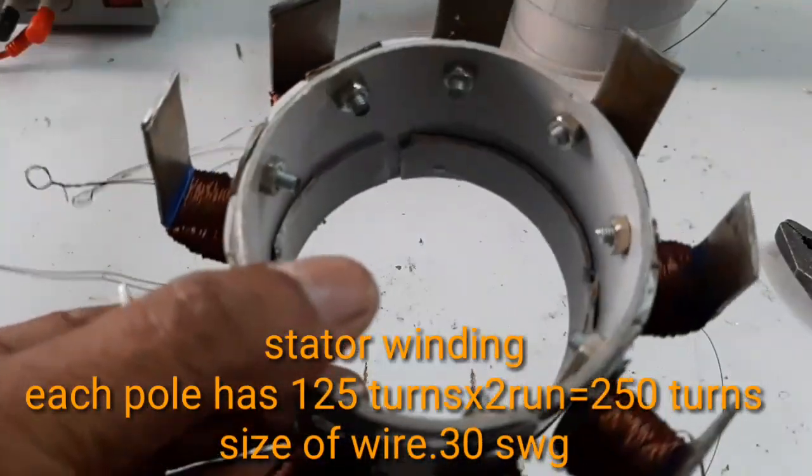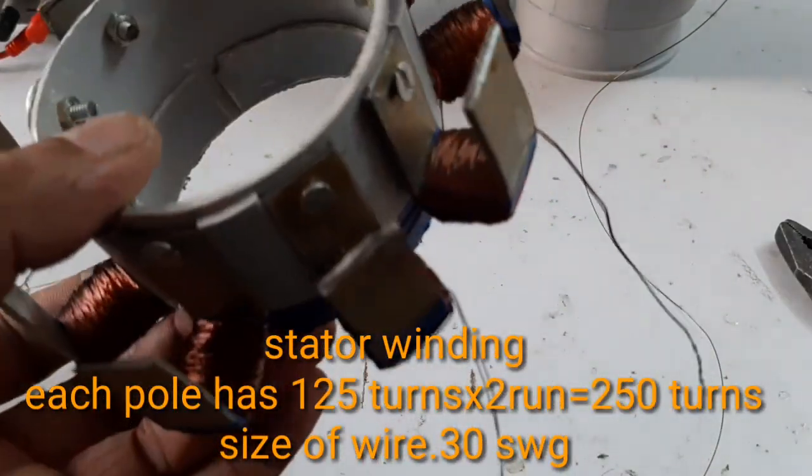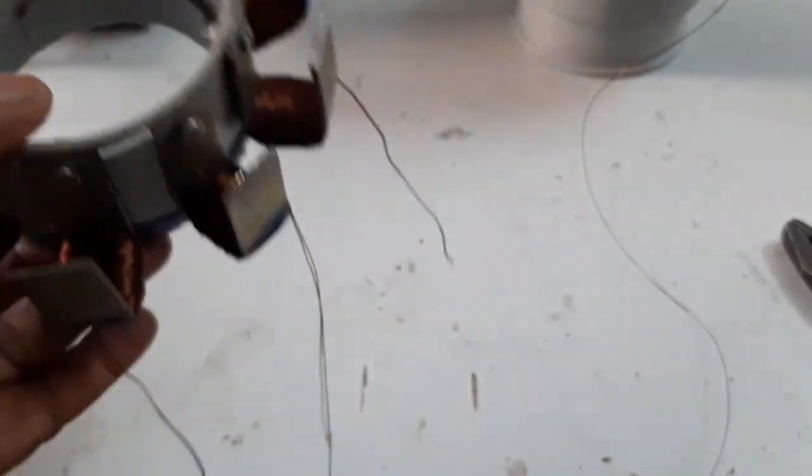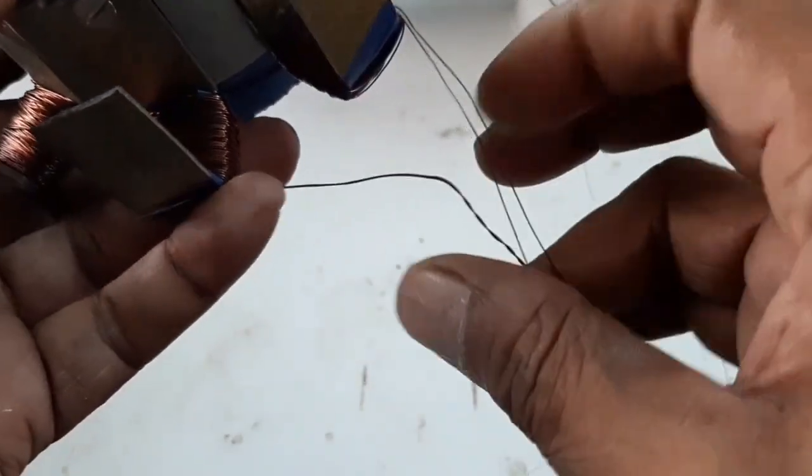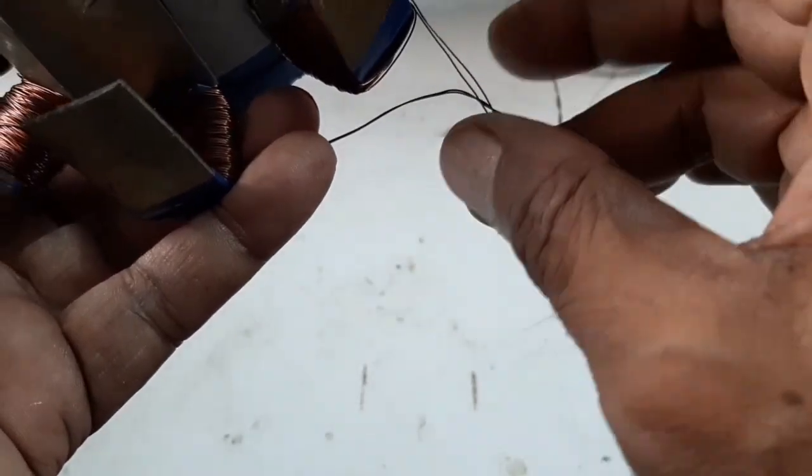Here the stator surrounded. Each pole has 250 turns. This is the finishing end and this is the starting end. So I want to start the three finishing ends.